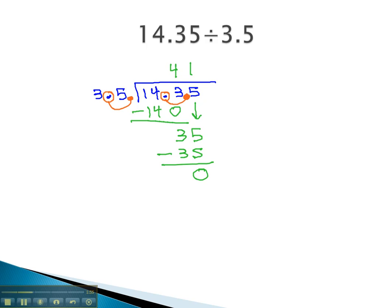Now to place the decimal in our final answer, we move it straight up from its new location into our answer, and we end up with 4.1 for our final solution, 4 and 1 tenth. We move the decimal on both numbers so that we're dividing by a whole number.